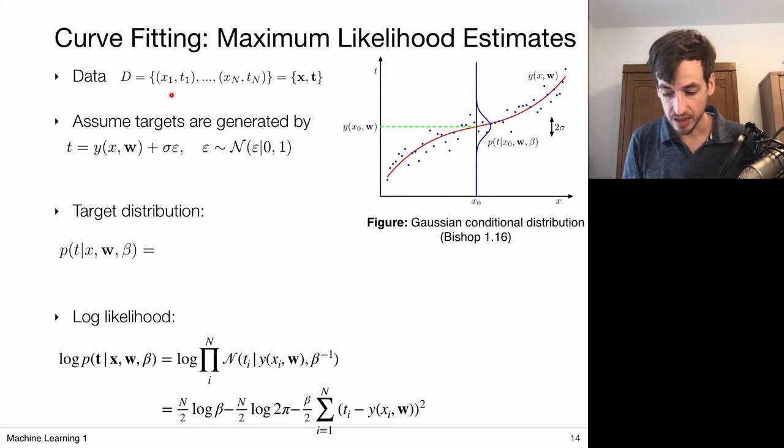What we're dealing with now is data that consists of input output pairs, or input target pairs. And we denote this with X, boldface T. Now we assume that our data is generated via the following model. So we assume that there exists some direct relation between X and the target values T.